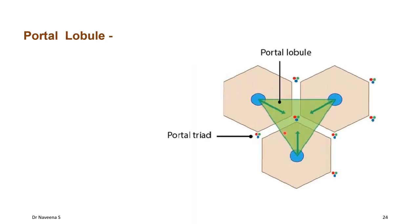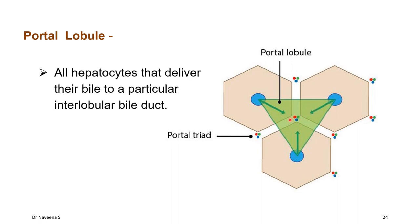The portal lobule is a portion of liver parenchyma that includes three adjacent classical lobules. It is centered by a portal triad and is triangular in shape, with a central venule at each angle. Blood flows from center to periphery towards the central venule, whereas bile secreted by all hepatocytes in the portal lobule flows towards the center into an interlobular bile duct.